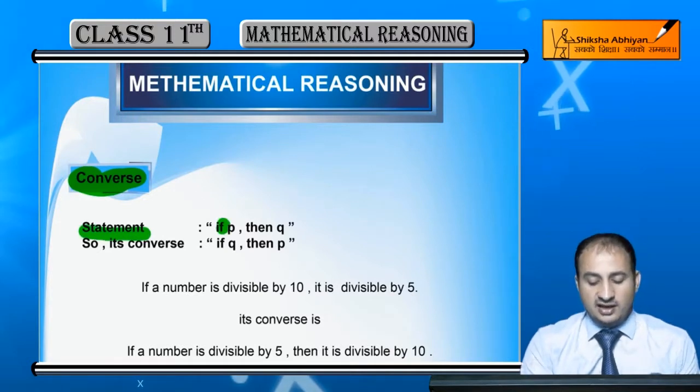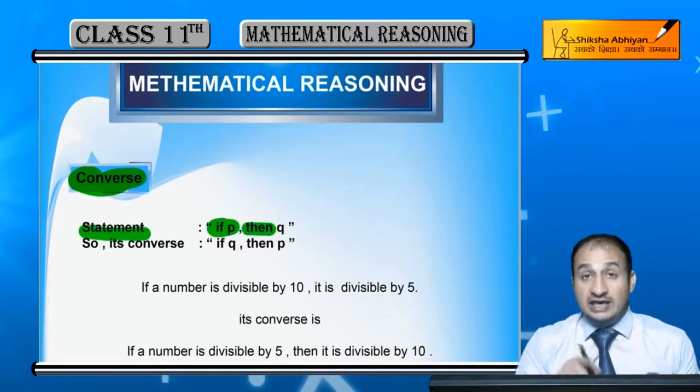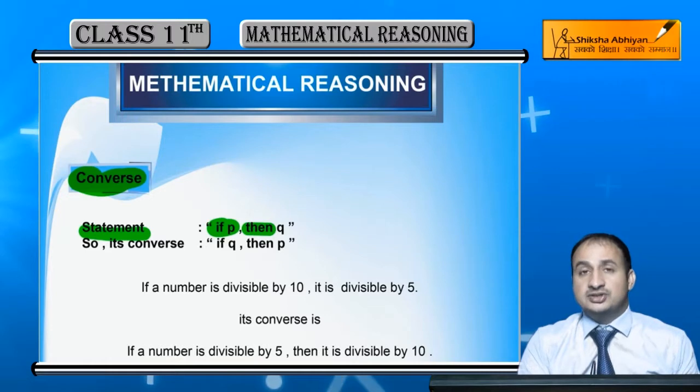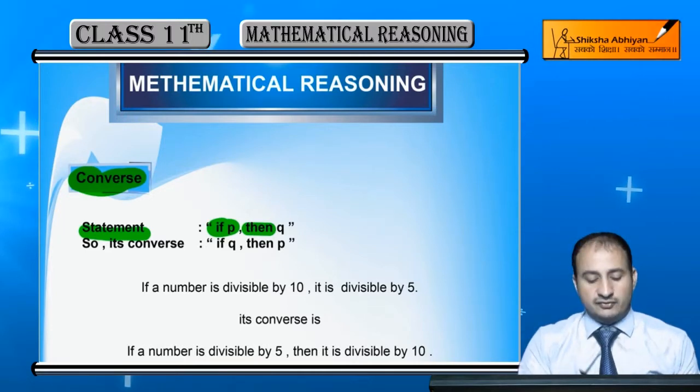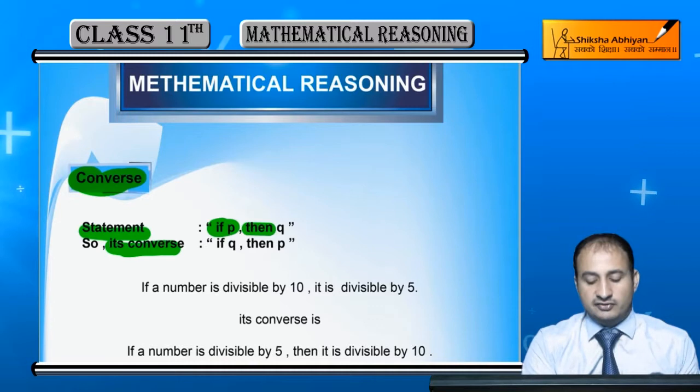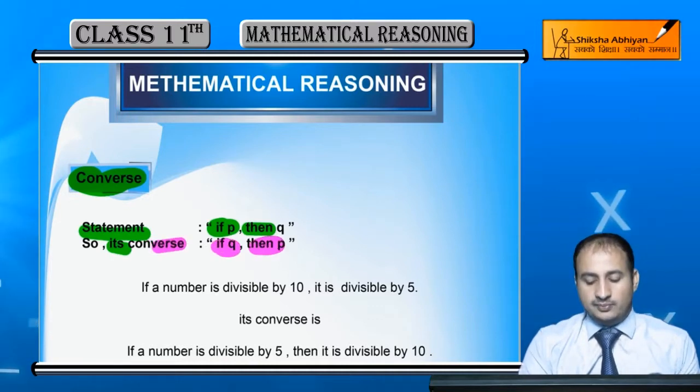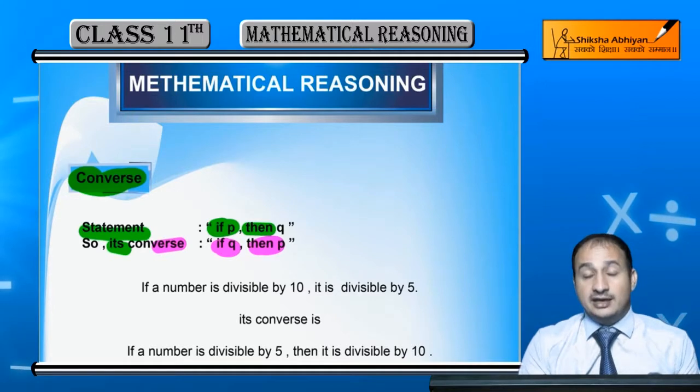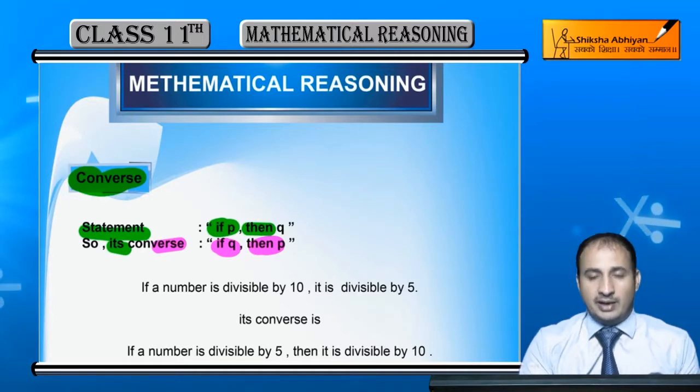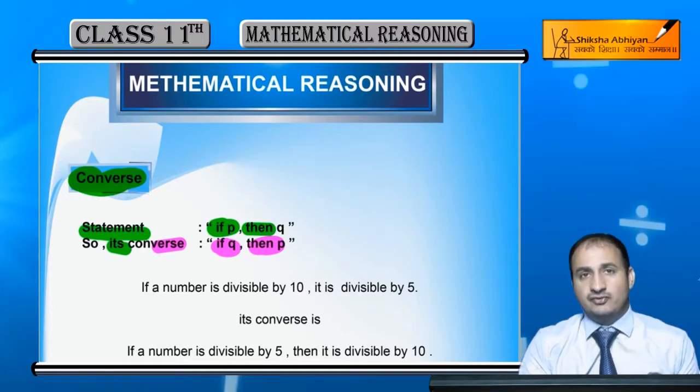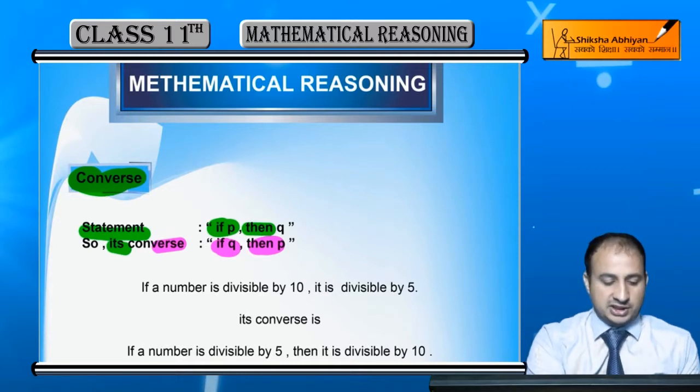If a statement is 'if p, then q' - using 'if' and 'then' to combine two parts - then its converse will be 'if q, then p'. So if p then q becomes q first, then p. The 'then' part comes first, and the 'if' part comes after. Understand?